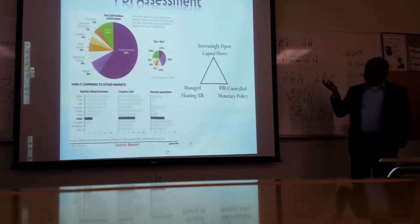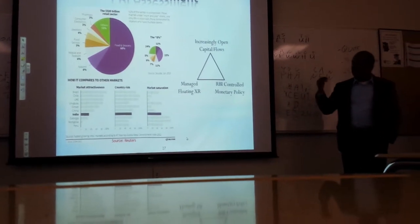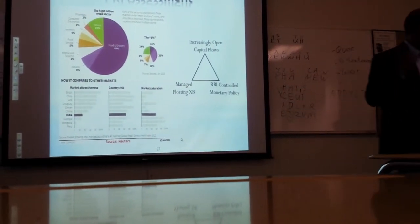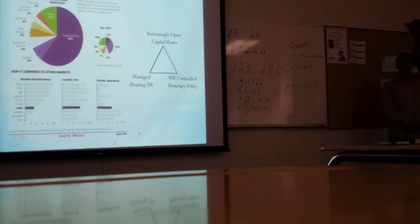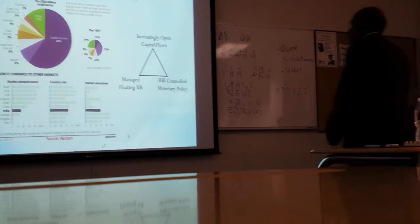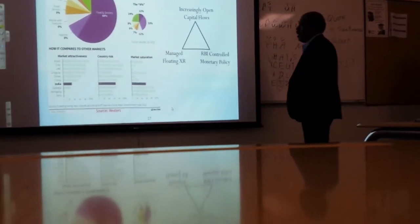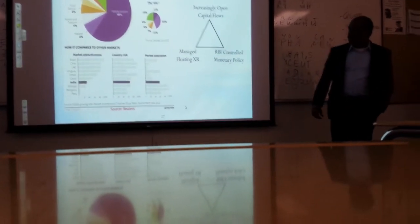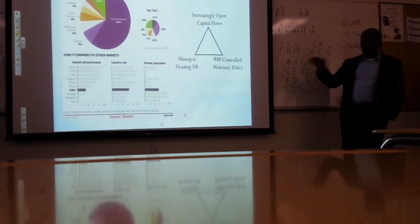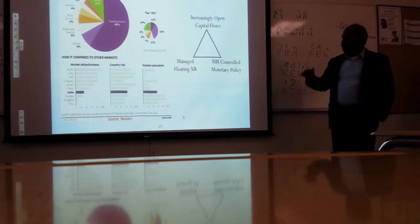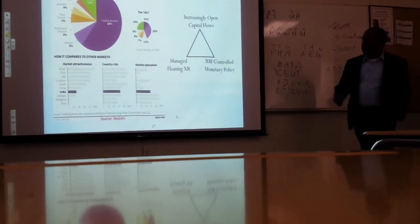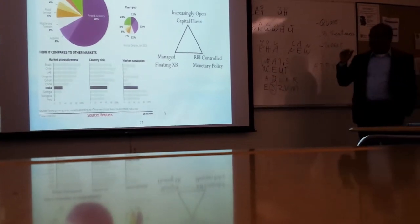So this is about the foreign direct investments, how do we really look at how the fabric looks like. Closer to $500 billion is what is the food and retail sector we've got, of which 5% is food services. And if we talk about the market attractiveness, where does India stand with other countries with what this slide represents? The source of this slide is Reuters. When you look at market attractiveness, it's not that attractive when compared to this.